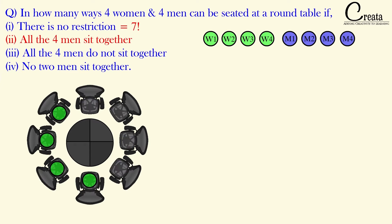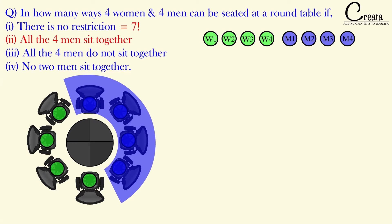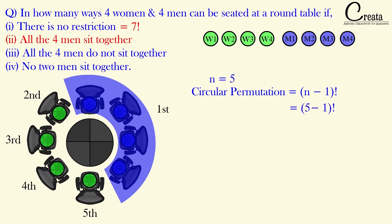We consider the 4 men as a single block — the same concept we applied when clubbing vowels together as a single letter. So we now have 5 entities: the 4 women and this one complete block. Therefore n equals 5, and our circular permutation is n minus 1 factorial, that is 5 minus 1 factorial, which equals 4 factorial.